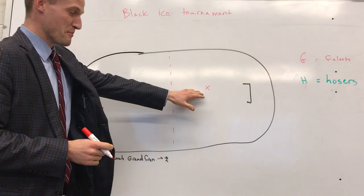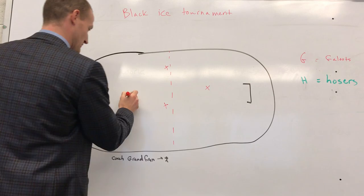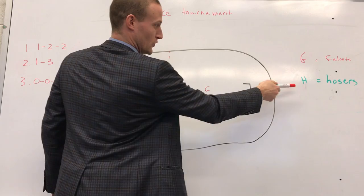He's always in great shape. We're gonna go G is for Galutes, H is for Hosers. That's the other guys, because they're gonna be hosing down the rink after we get through with them.